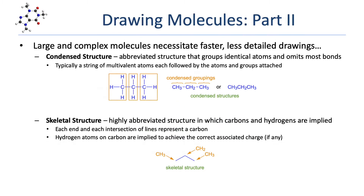Before we can go further in looking at how organic compounds are named, we need to look at drawing molecules. We're going to be looking at much larger and more complex molecules, which necessitates faster ways of drawing things. The first new type is condensed structures — an abbreviated structure that groups together identical atoms and omits most of the drawn bonds.